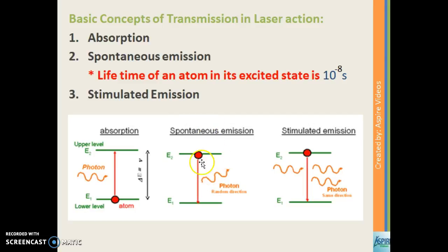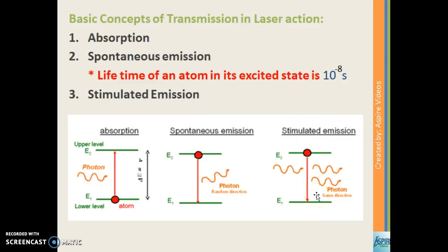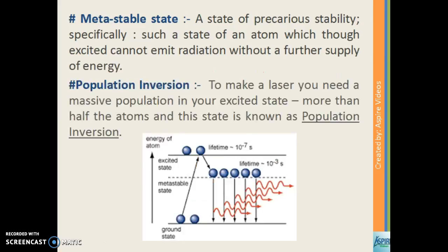Next we have stimulated emission. In this process, a photon strikes an atom which is in its excited state before its lifetime ends, bringing it into the lower energy level. The photon released is in phase with the photon that struck it, resulting in stimulated emission. You can see in the diagram how stimulated emission takes place.